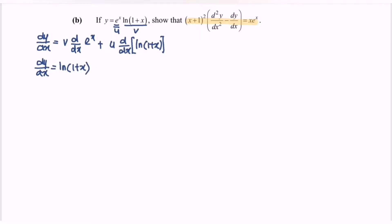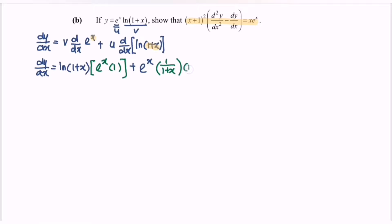Differentiating eˣ gives eˣ, so the first term is ln(1 plus x) times eˣ. For the second term, u is eˣ, and differentiating ln(1 plus x) gives 1 over (1 plus x) times the derivative of (1 plus x), which is 1. So dy/dx equals e to the power of x times ln(1 plus x) plus e to the power of x over (1 plus x).